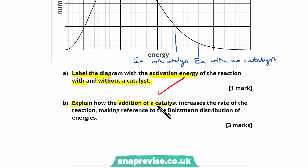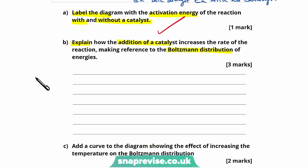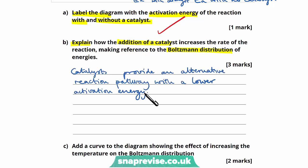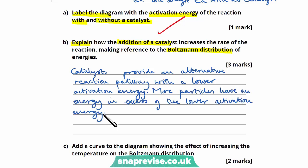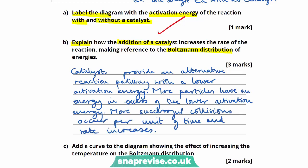Moving on to part B, we're asked to explain how the addition of a catalyst increases the rate of reaction, making reference to the Boltzmann distribution of energies. The catalyst provides an alternative reaction pathway with a lower activation energy. As a result, more particles have an energy in excess of this new lower activation energy, and therefore more successful collisions occur per unit of time. The first mark comes from the alternative pathway point, the second from more particles exceeding the new Ea, and the third from more successful collisions increasing the rate.